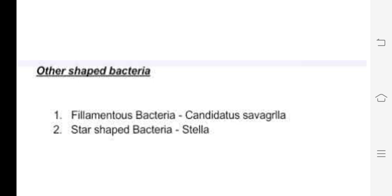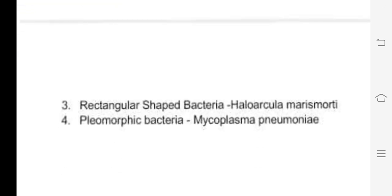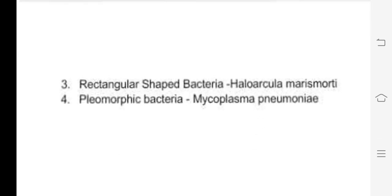The next bacteria is rectangular-shaped. This is Haloarcula marismortui, which has a rectangular shape, and you can see how the rectangular shape appears like a square. This is the pleomorphic bacteria, and an example is the structure of Mycoplasma pneumoniae.